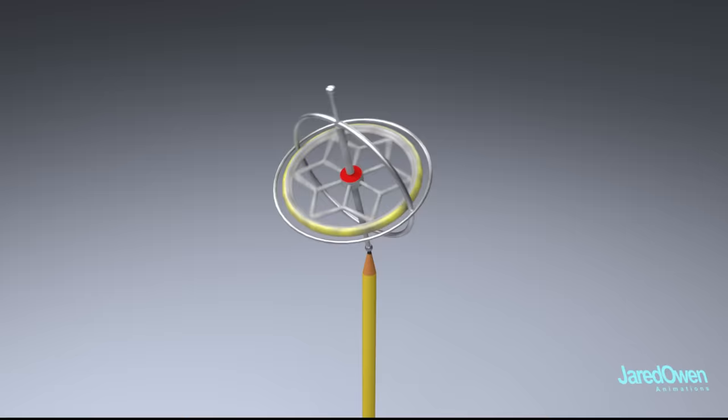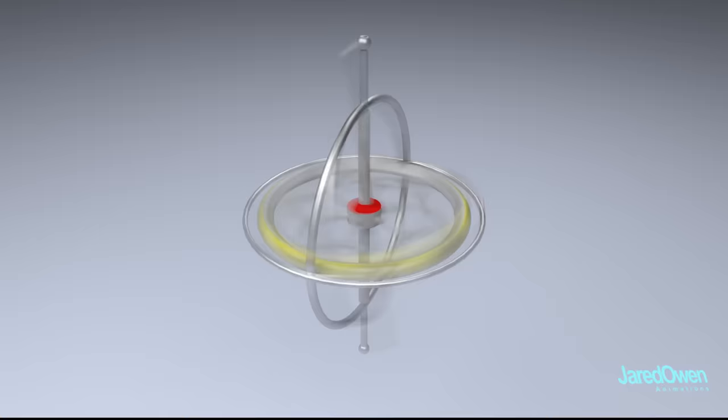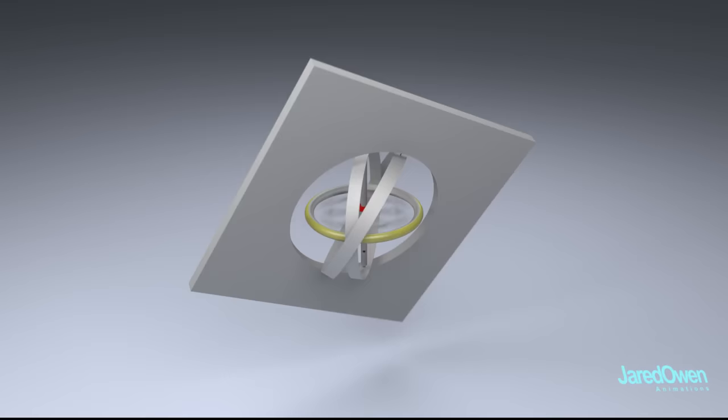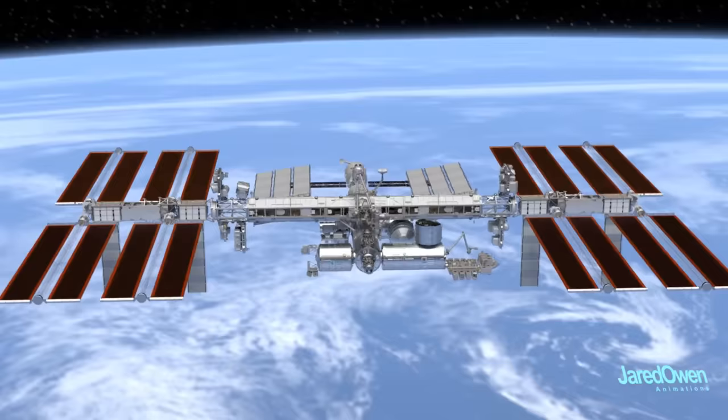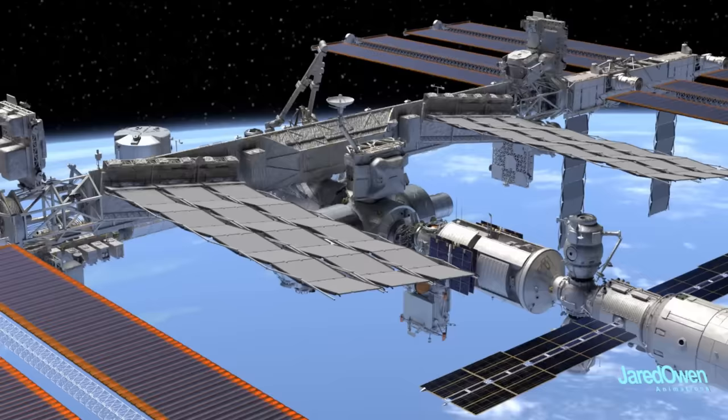More sophisticated gyroscopes will have multiple gimbals, so that no matter which way the frame rotates, the spinning disc can maintain its original orientation. This is extremely useful, with a wide variety of applications including airplanes, and even space stations, so that they always know which direction they are facing.